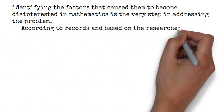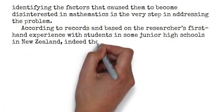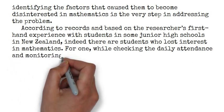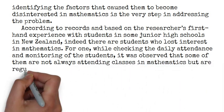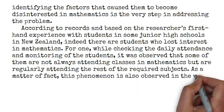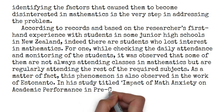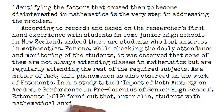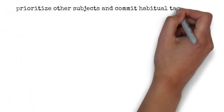According to records and based on the researcher's first-hand experience with students in some junior high schools in New Zealand, indeed, there are students who lost interest in mathematics. For one, while checking the daily attendance and monitoring of the students, it was observed that some of them are not always attending classes in mathematics, but are regularly attending the rest of the required subjects. As a matter of fact, this phenomenon is also observed in the work of Estonanto. In his study titled 'Impact of Math Anxiety on Academic Performance in Pre-Calculus of Senior High School,' Estonanto found out that in Torelia, students with mathematical anxiety have the tendency to intentionally prioritize other subjects and commit habitual tardiness and absences.